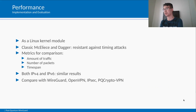We implemented our instantiation of PQ WireGuard as a Linux kernel module. The implementations of both Classic McEliece and Dagger are resistant against timing attacks. Classic McEliece is implemented efficiently, while there is some room for improvement for Dagger. We compare the handshake efficiency with the following metrics: the amount of traffic in bytes, the number of exchanged packets, and the time spent on the handshake. We collected data in both IPv4 and IPv6 networks and the results are similar; here we include only the data from an IPv6 network. We compare its performance with the original WireGuard and other VPN software, including OpenVPN, IPsec, and PQCryptoVPN.